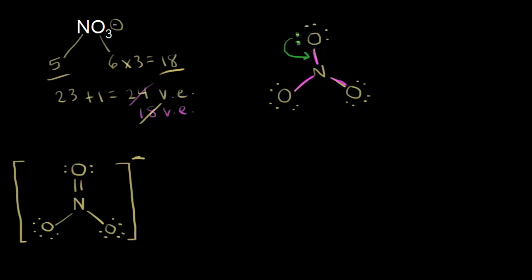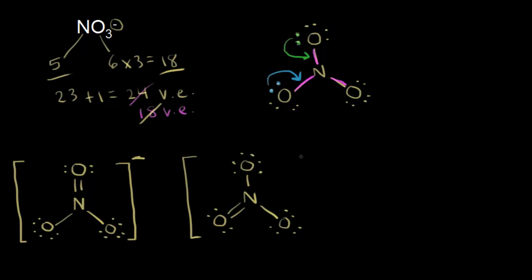But we didn't have to take a lone pair of electrons from the top oxygen. We could have taken a lone pair from the oxygen on the bottom left. If those electrons moved in, we could have drawn another dot structure, which would have been equally valid. We could show this oxygen on the bottom left now double-bonded to nitrogen — it used to have three lone pairs, now it has only two. The top oxygen is still a single bond with three lone pairs, and so is the bottom right oxygen. This is a valid dot structure as well, so let's put our brackets with a negative charge.